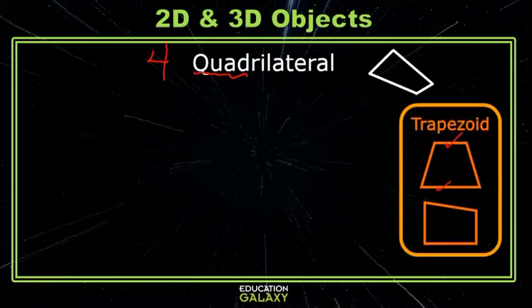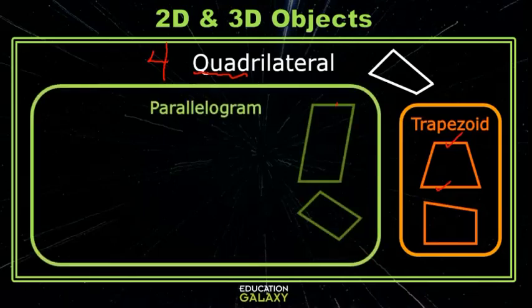Quadrilaterals with one pair of parallel sides are called trapezoids. If a quadrilateral has two pairs of parallel sides, then it is called a parallelogram.